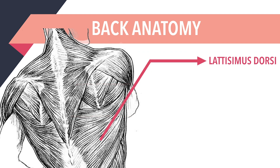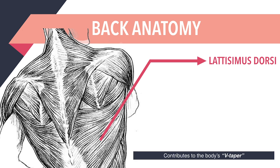Moving on to my favourite, the latissimus dorsi, also known as the lats or wings, are the largest and most well-known of all the back muscles. Once these muscles are large enough, they are responsible for your body's V-taper because of their protruding appearance under your armpit area and the back of your ribs. For women seeking a more hourglass figure, the lats can contribute to the illusion of a smaller waist when done right, so never forget about your lats.